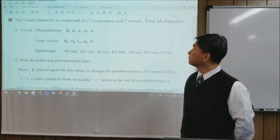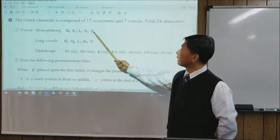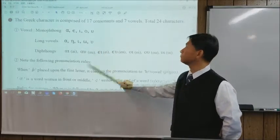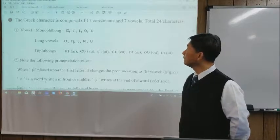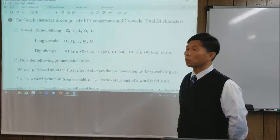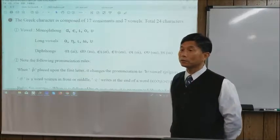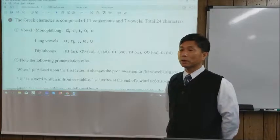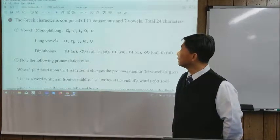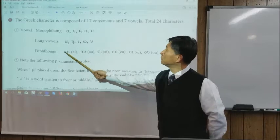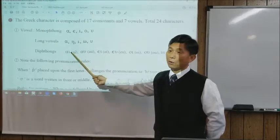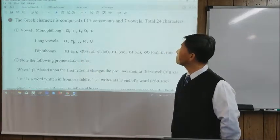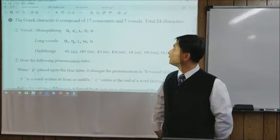Those 7 vowels are categorized as monotone (short vowels), long vowels, and diphthongs. The monotone is the short vowel — a short sound. Long vowels are longer than short vowels. A diphthong consists of two vowels but counts as one vowel.